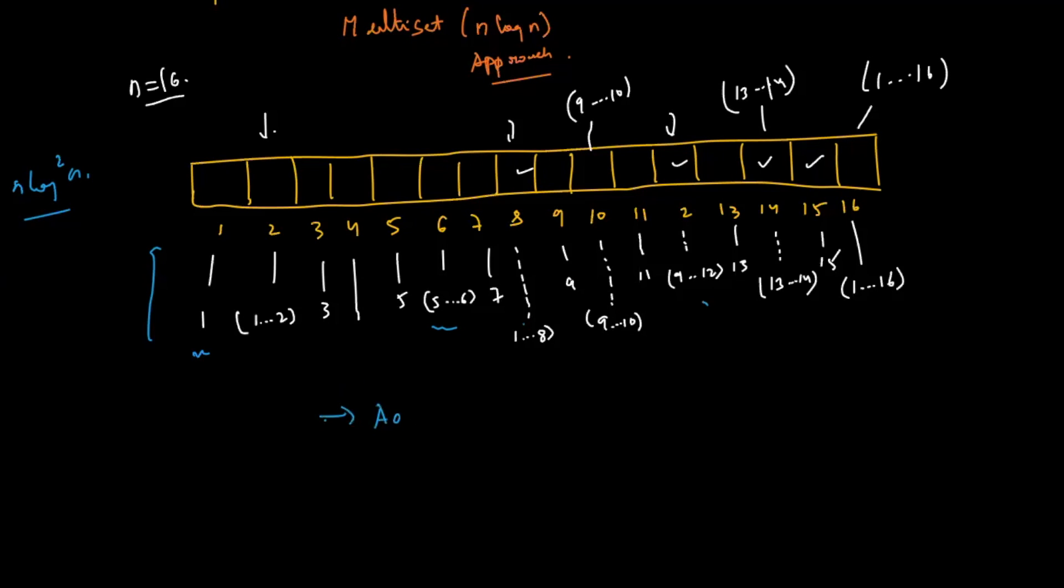We know that previously in the add element operation we were doing it in log of n, but the delete operation took log square n. So we have to eliminate one log from here. If we are able to do so, we will end up at an n log n approach.